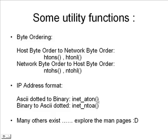To convert a binary IP address into an ASCII dotted format, we use the inet_ntoa call, which is network to ASCII. Many such functions exist. You can explore the man pages as your experience with network and socket programming increases in the days to come.